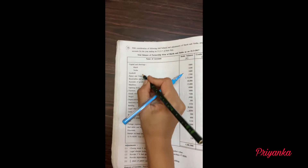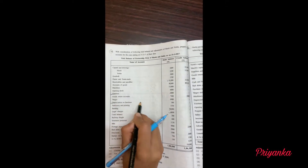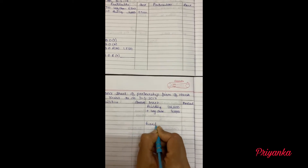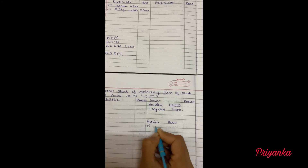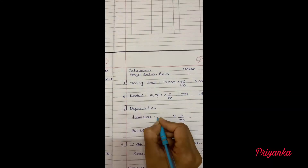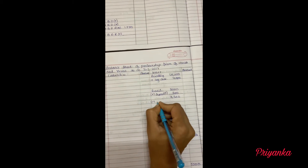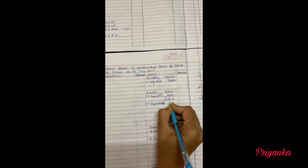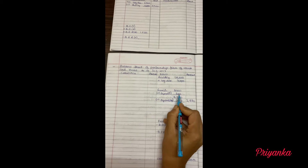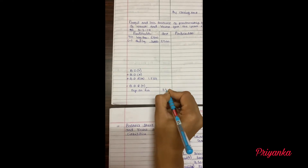Next, provide depreciation 10% on furniture and 5% on building. For furniture, we take the furniture amount of 3,000 plus depreciation on furniture from the trial balance of 300, giving 3,300. Remove 10% — that is 330 — get it minus, giving depreciation on furniture of 2,970 for the balance sheet. For the adjustment entry, write down depreciation on furniture at 330.